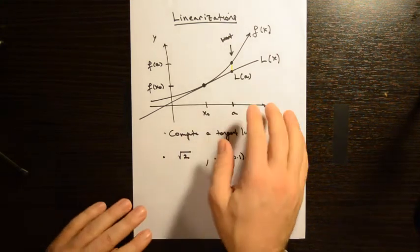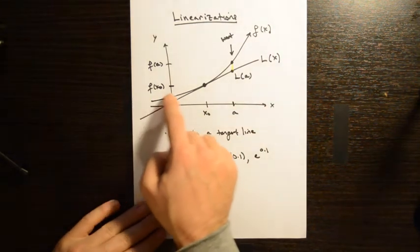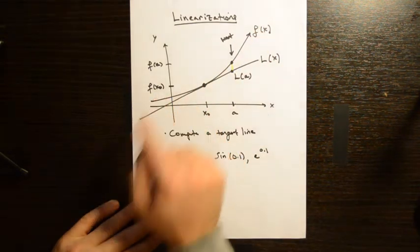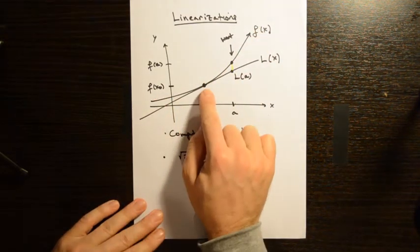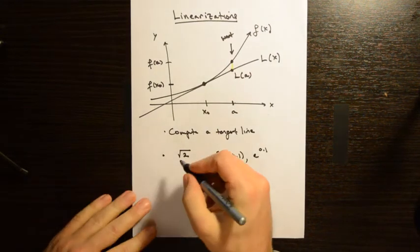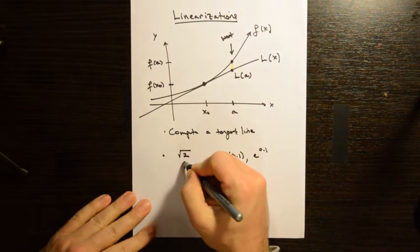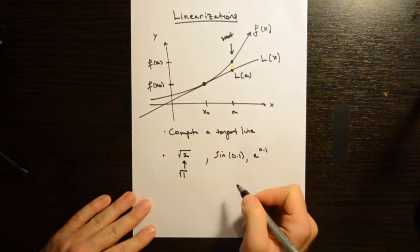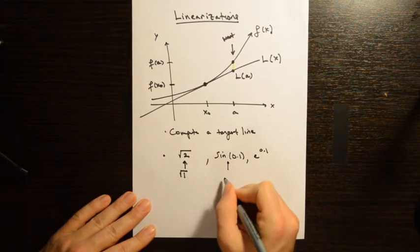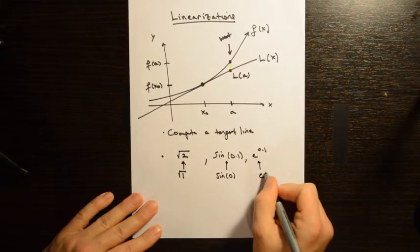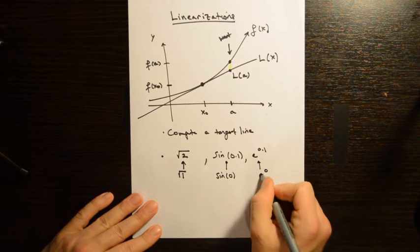The way this picture basically works: you have an underlying function f of x, and there's some point x₀, f of x₀ that's easy to calculate in the context of the problem. For example, for the square root of 2, a number nearby that's easy to calculate is the square root of 1. A number nearby that's easy to calculate is the sine of 0, and a number nearby that's easy to calculate is e to the 0.